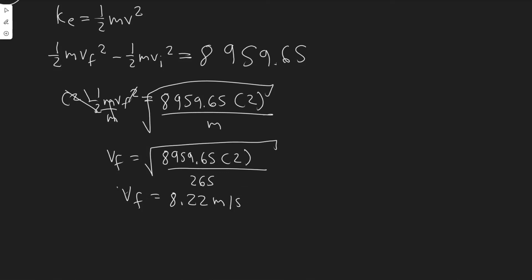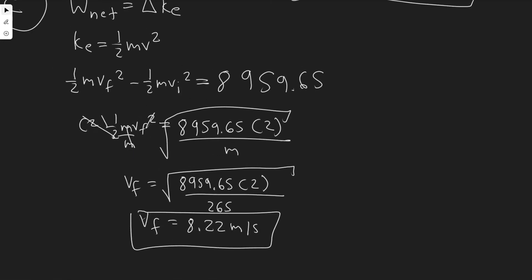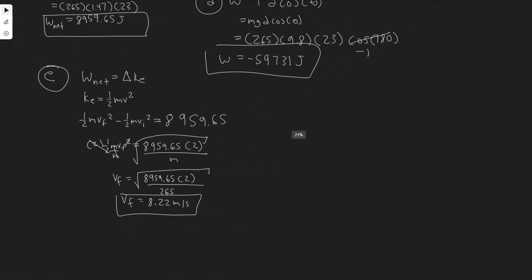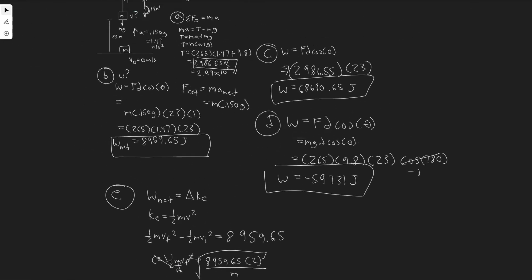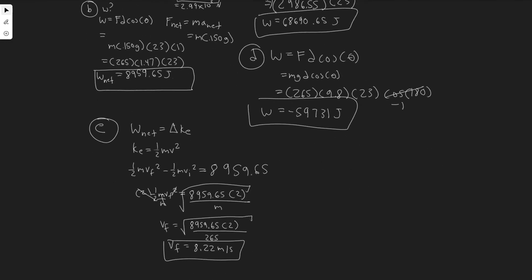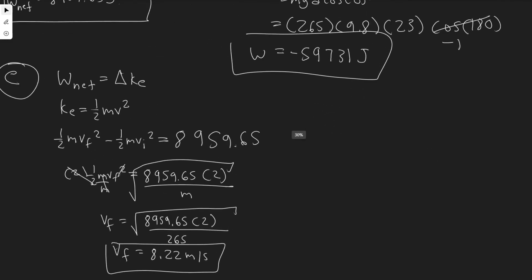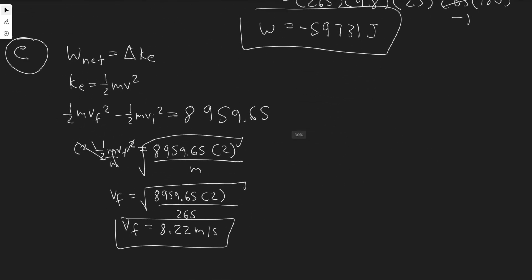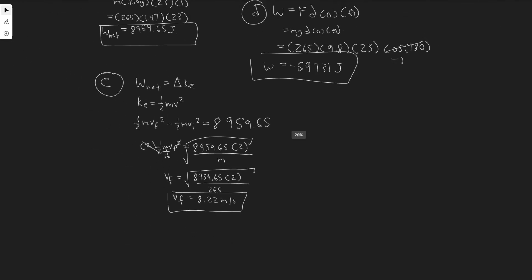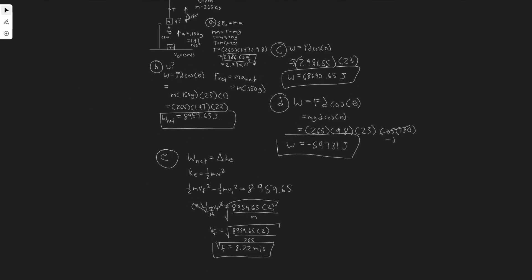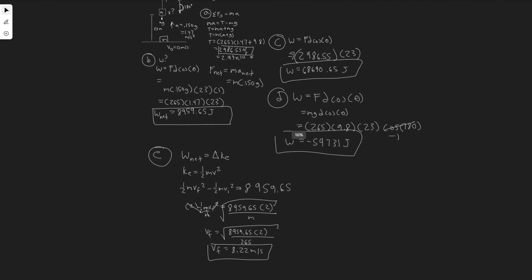You can round however you'd like, but the final speed is about 8.22 meters per second — that's the velocity after traveling 23 meters. That's your answer for E, and those are the answers for all five parts. Hopefully you found this useful.